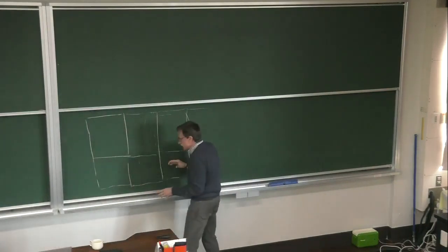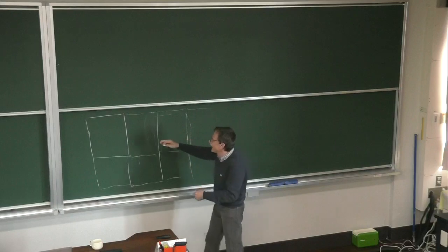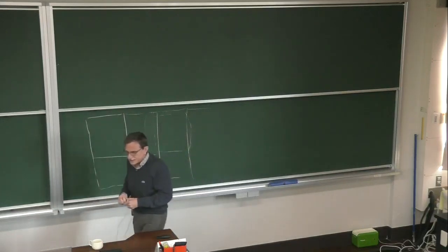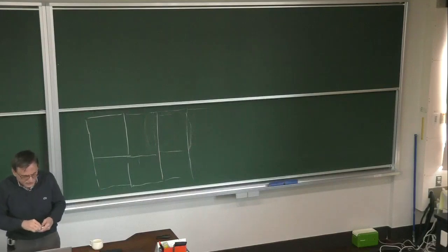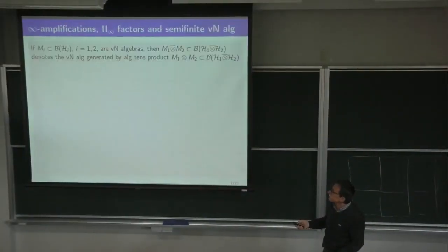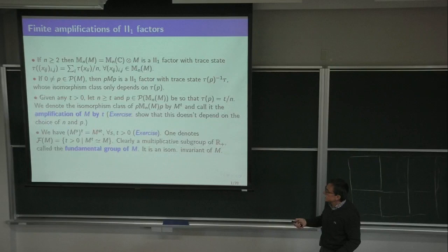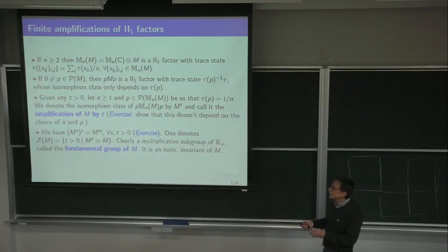We obviously have that this amplification satisfies: consecutive amplifications give you (M^s)^t = M^{st}. So the word 'amplification' makes you use this notation with the t up, and that's the original notation of Murray and von Neumann.